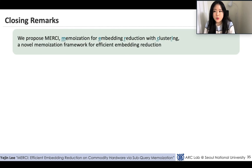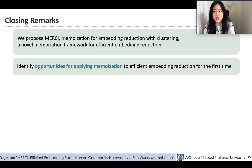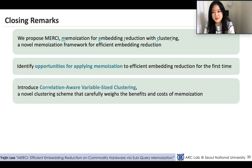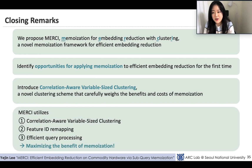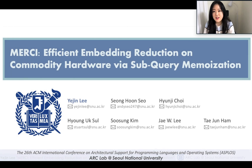To wrap up, we proposed MERCI — Memoization for Embedding Reduction with Clustering — a novel memoization framework for efficient embedding reduction. We identified opportunities for applying memoization to embedding reduction for the first time, and introduced correlation-aware variable-size clustering, a novel clustering scheme that carefully weighs the benefit and cost of memoization to maximize its benefit. Thank you for listening.